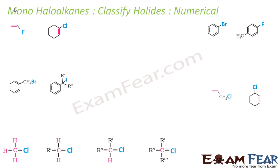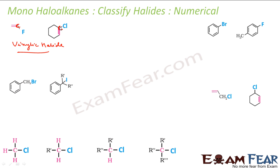Now let's classify some examples. First example: the hero carbon is a double-bonded carbon — that is a vinylic halide. Second example: the hero carbon is also a double-bonded carbon — again a vinylic halide. Both examples have the halogen attached to a double bond carbon, so both are vinylic halides.